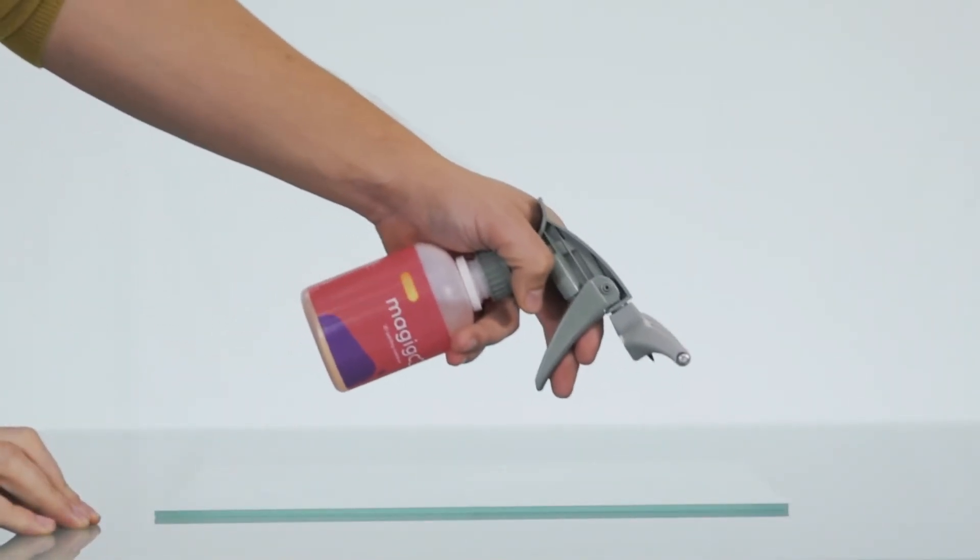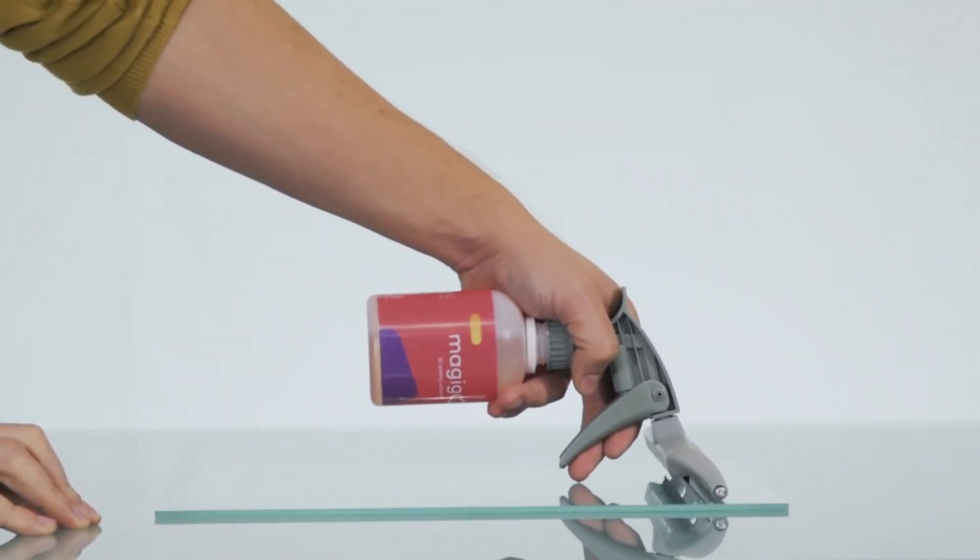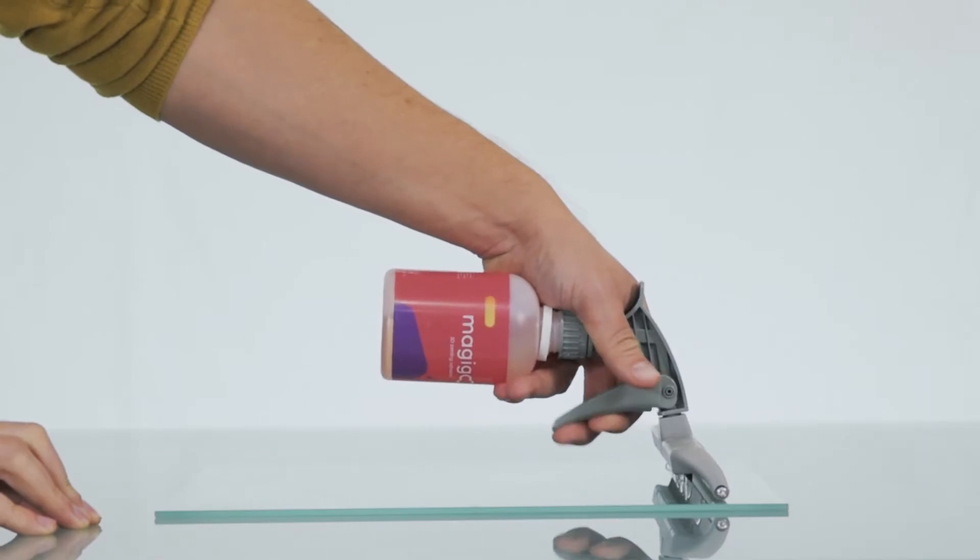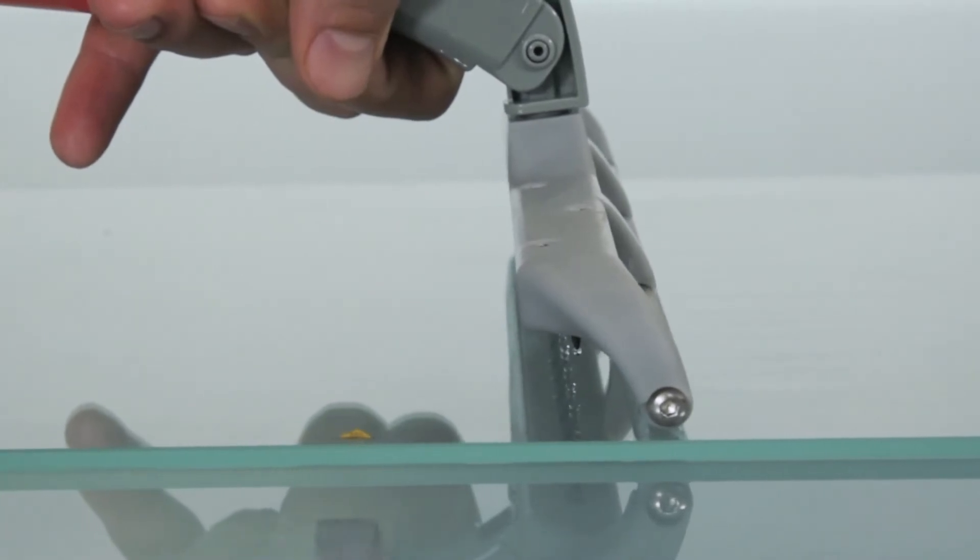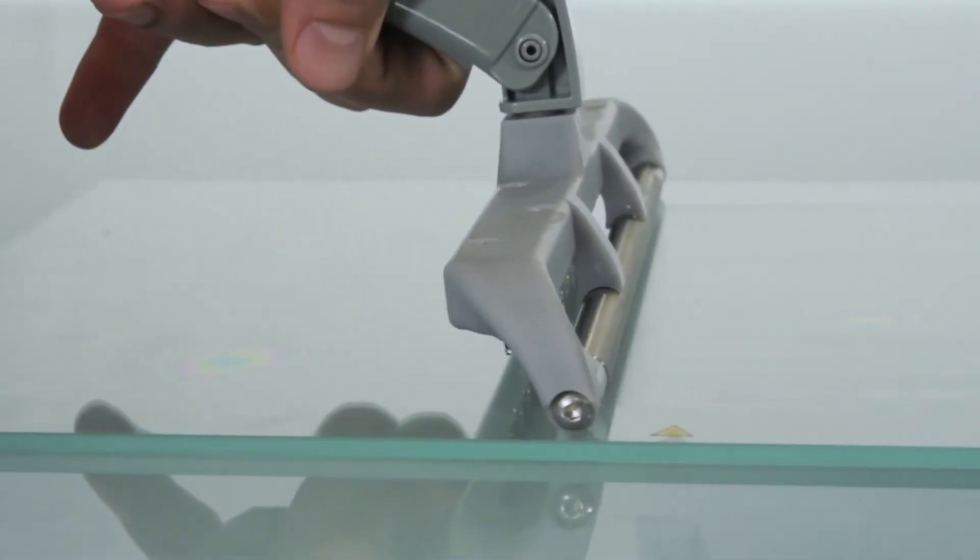To coat your build plate, place the thin film applicator firmly on the build surface. Pump the Coater once, press the thin film applicator firmly against the surface and slide across the bed, spreading the Magigoo adhesive.